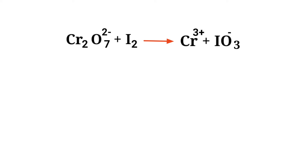Figure out the reducing and oxidizing agents by the rules of assigning oxidation numbers. In the ion electron method, one reaction is divided into two half reactions, which are then balanced and added together.